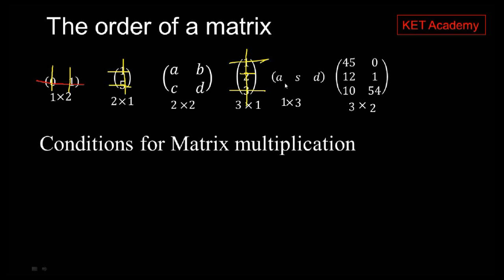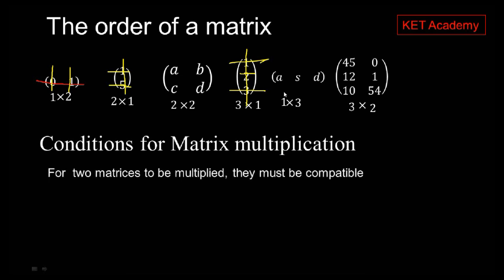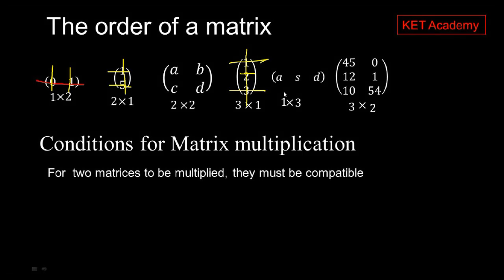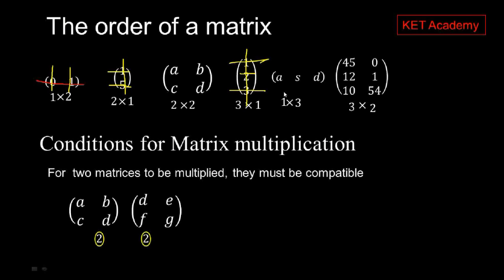Now let's go to the conditions for matrix multiplication. To multiply two matrices we need a good knowledge of the order of the matrix, because for two matrices to be multiplied they must be compatible. Compatibility means that the number of columns of the first matrix must equal the number of rows of the second matrix. For example, a two-by-two matrix multiplied by a two-by-two matrix is compatible because the first matrix has two columns and the second has two rows.